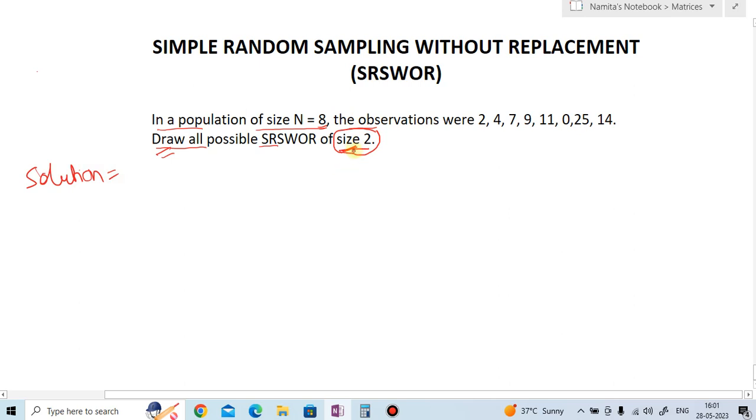So first observation is 2. First we will take 2, 4, then 2, 7, next 2, 9, then 2, 11, then 2, 0, then 2, 25, and 2, 14. These are the size 2 simple random sampling without replacement observations starting with 2.